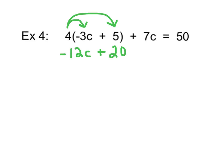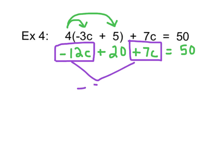Now, I'm going to stop distributing, because even though I have another term, that plus 7c, it is not inside the parentheses. That means it will not get multiplied by the 4. So, I'm just going to rewrite plus 7c equals 50. This time, my next step is to combine like terms. Because I have two terms here that have a c after it, these guys are alike. Negative 12c plus positive 7c is going to give me negative 5c plus 20 equals 50.